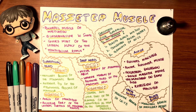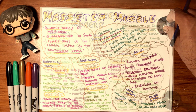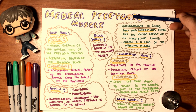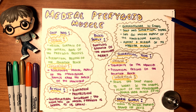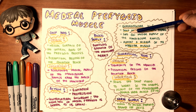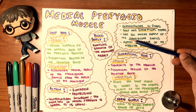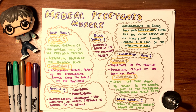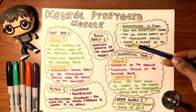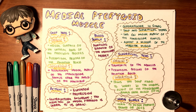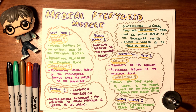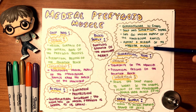A key pattern to remember: nerve supply for these muscles is trigeminal, and blood supply is typically the maxillary artery. The medial pterygoid is the inner pterygoid muscle — quadrangular in shape with deep and superficial heads. It lies on the medial aspect of the mandibular ramus, almost a mirror image of the masseter.